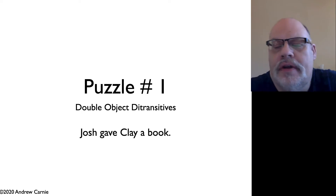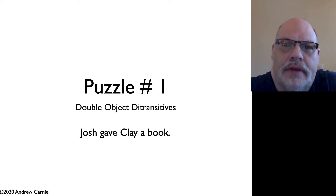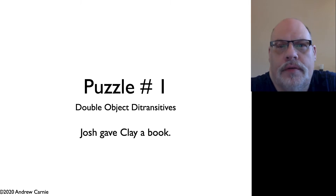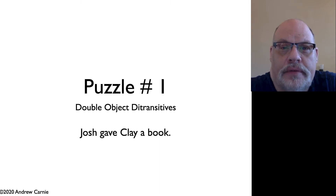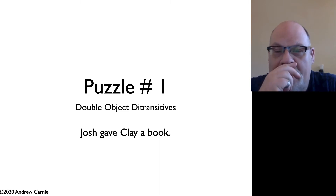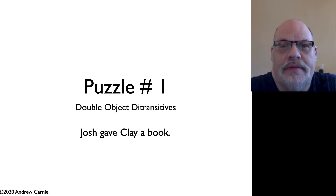In this unit, we're going to address a different set of issues with X-bar theory. It has to do with verbs that have more than one argument — specifically, ditransitive verbs, which have three arguments. If you only have a complement and a specifier position, what are we going to do with that third element in these structures?